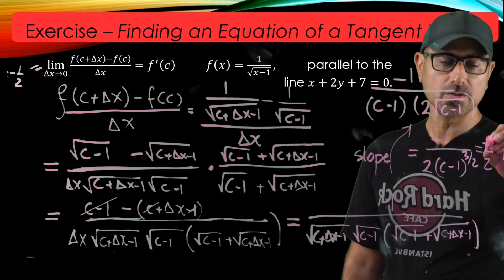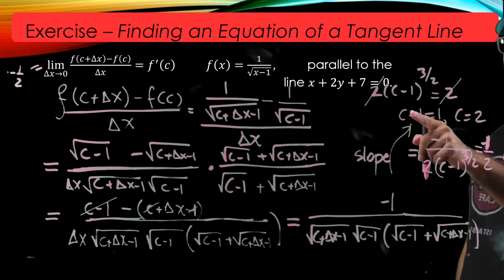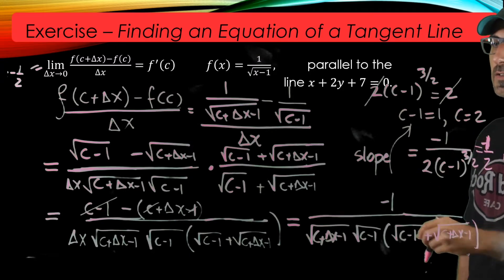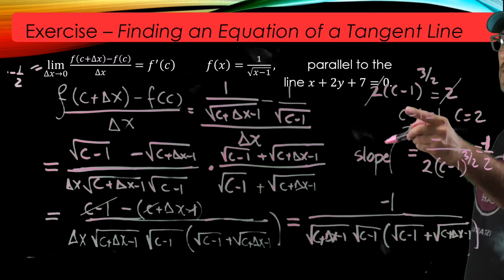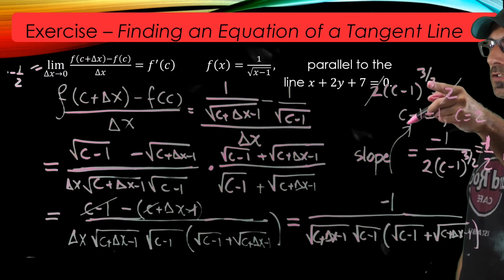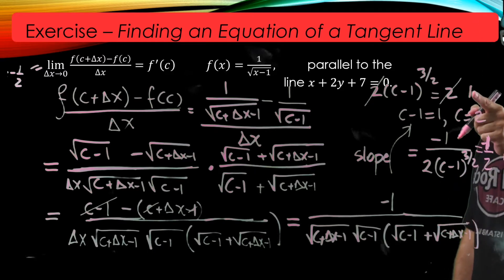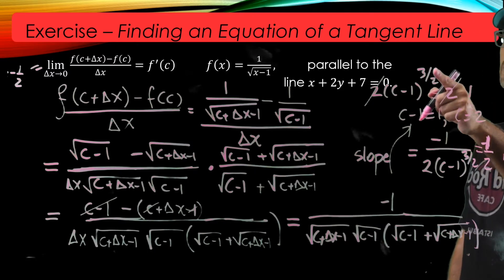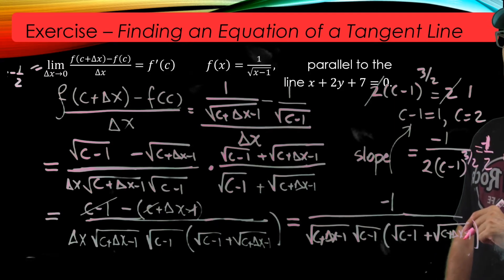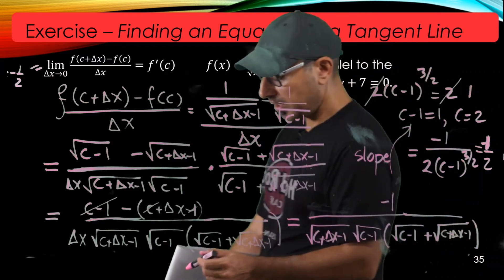Using cross products, I simplify to 2 times (c minus 1)^(3/2) equals 2. The twos cancel, reducing to (c minus 1)^(3/2) equals 1. Taking the two-thirds power of both sides gives c minus 1 equals 1, so c equals 2.